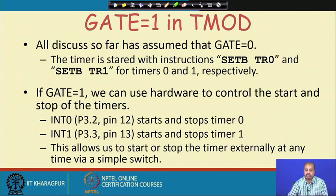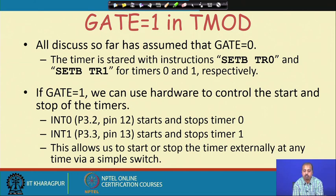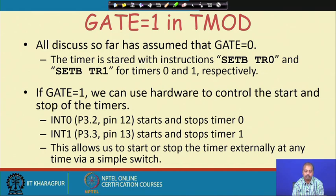Next we consider the situation where the gate bit is equal to 1 in the TMOD register. Everything discussed so far had gate equal to 0, so there was no external control — everything was controlled by the internal TR bit. We used set bit TR0 and set bit TR1 for timer 0 and timer 1. With gate equal to 1, we can use hardware to control the start and stop of the timers via the INT0 and INT1 pins. INT0 is pin number 12 of port 3, bit number 3.